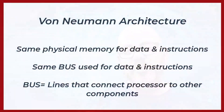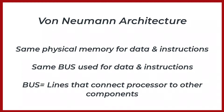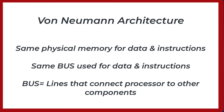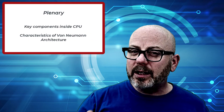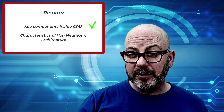The key characteristic to remember about the von Neumann architecture is that the same physical memory is used for both data and instructions, and there's a common bus for transferring both data and instructions. Buses, by the way, refer to the lines that connect the processor to other parts of the computer's architecture, like RAM or cache memory.